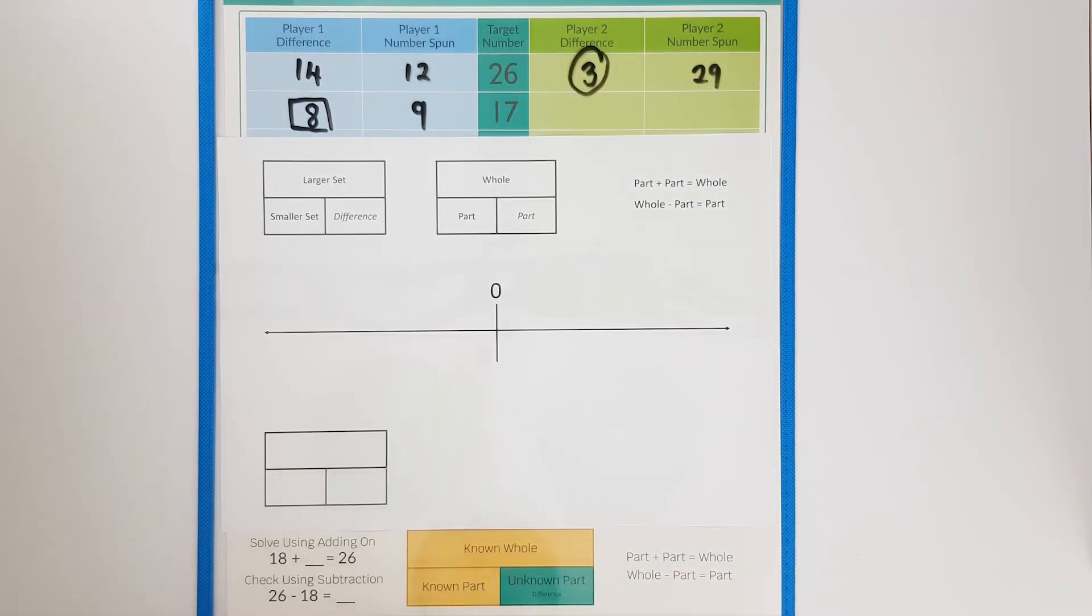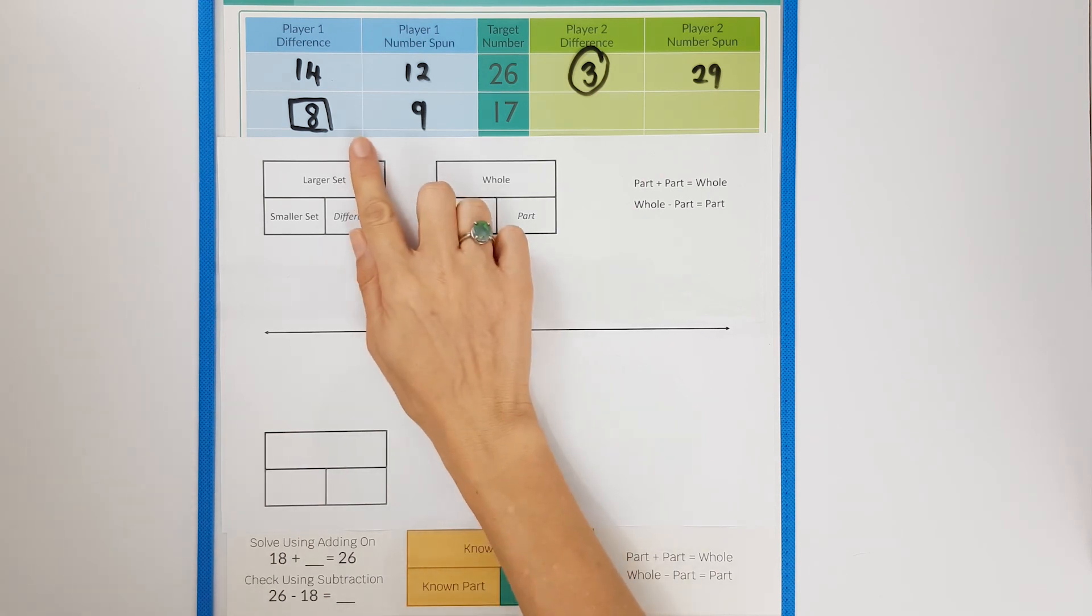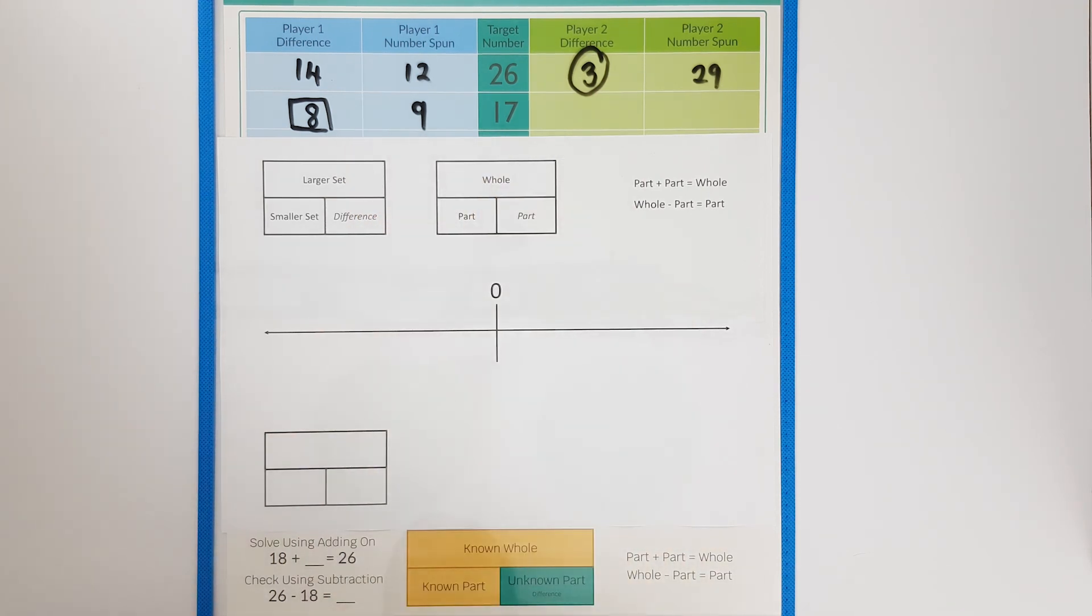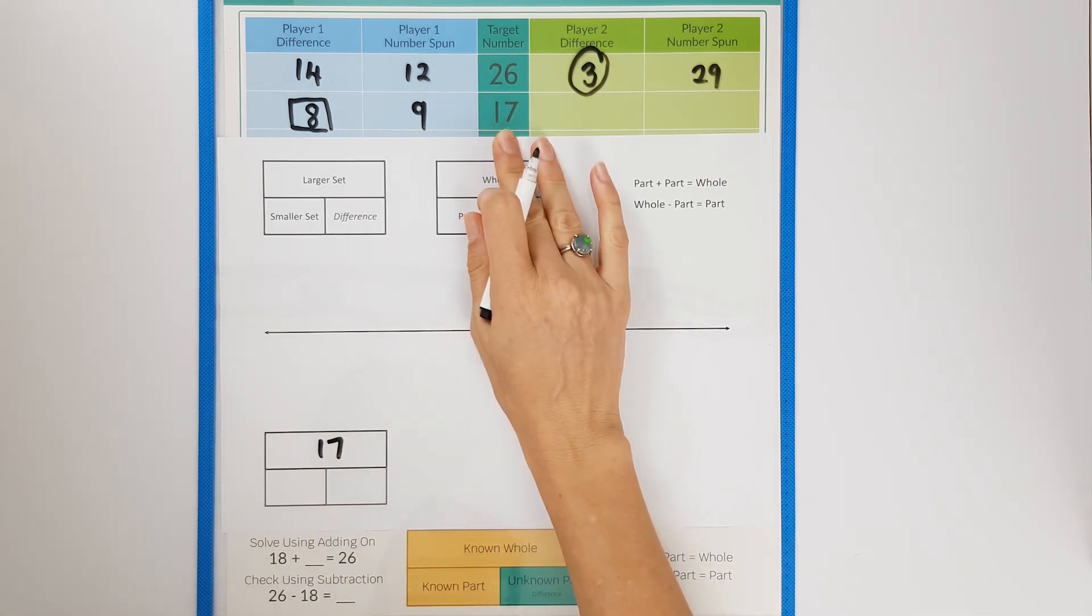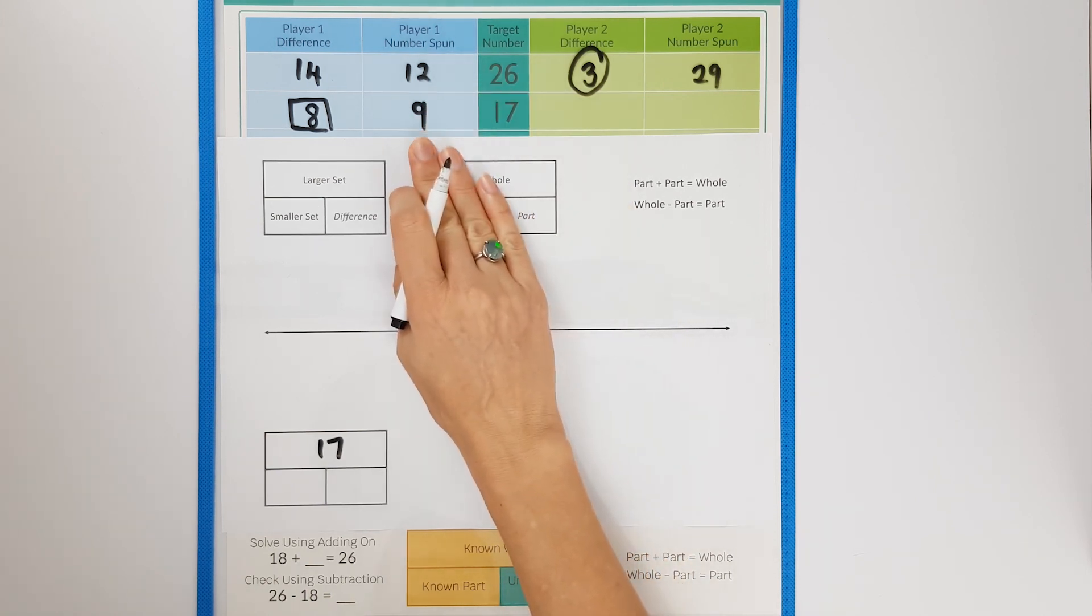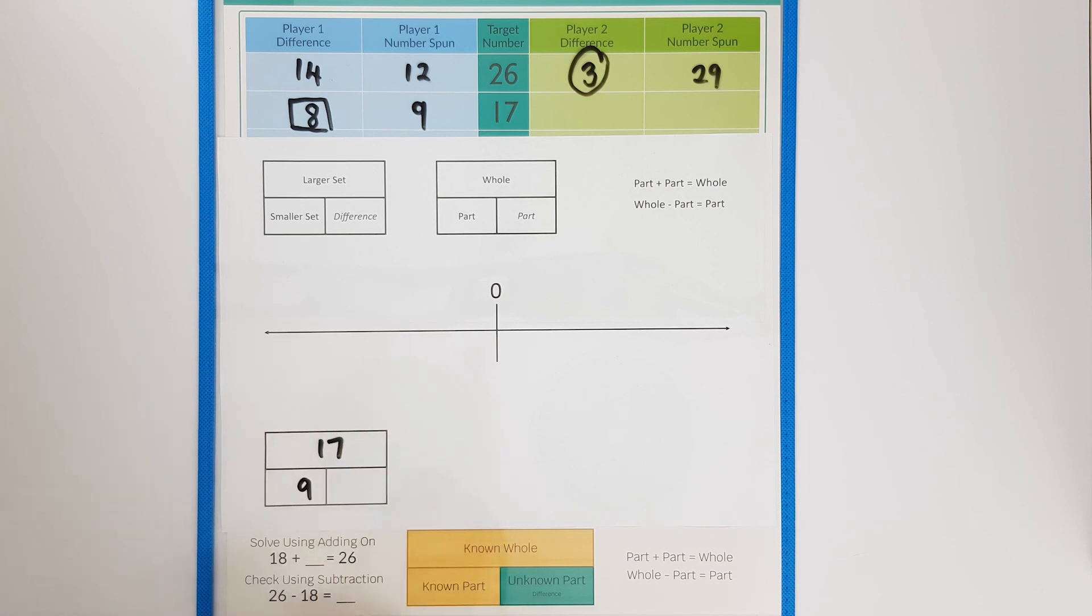Use the blocks if you need to for help or alternatively sometimes filling in the part-part-whole diagram of the whole of seventeen or the larger set, the part I know of nine and calculating the difference is enough to help you. You could draw jottings: nine, I want to add one and this gets me to ten, and then I would want to add another seven and this would get me to seventeen. And this was the difference or the part I added on.